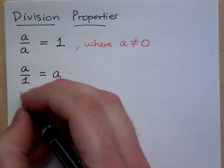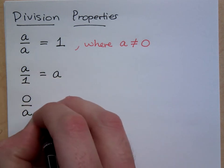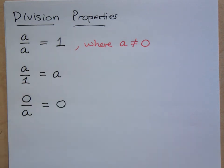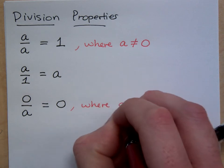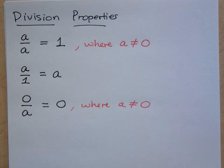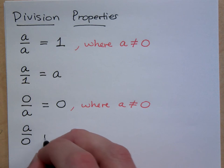All right, what about zero divided by any number? What is that? That's zero. But again, we have to make the provision that we are not dividing by zero, because as you guys have already figured out, division by zero is what?